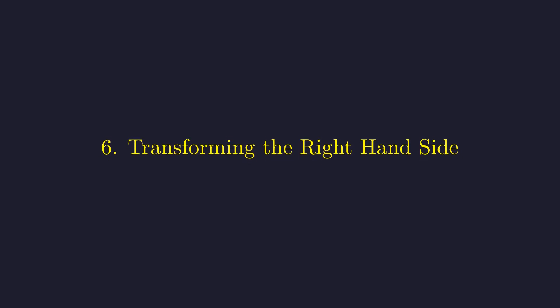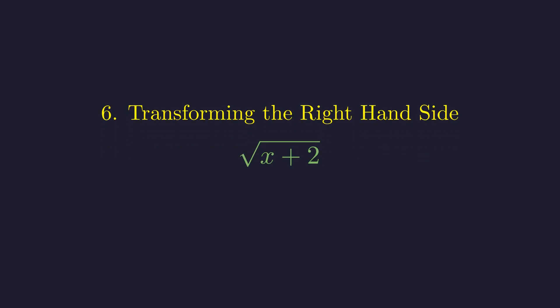Now for the right side. We have the square root of x plus 2. We apply the same substitution here, replacing x with 2 cosine theta.